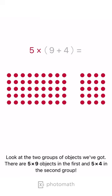Look at the two groups of objects we've got. There are 5 times 9 objects in the first and 5 times 4 in the second group.